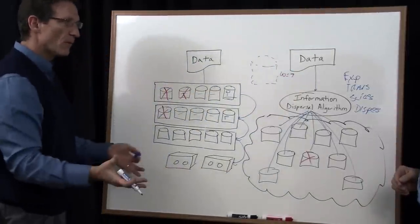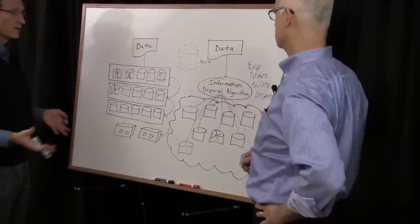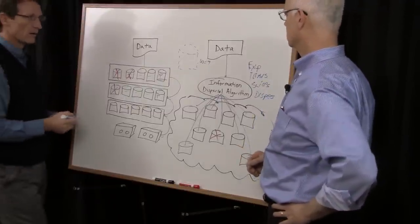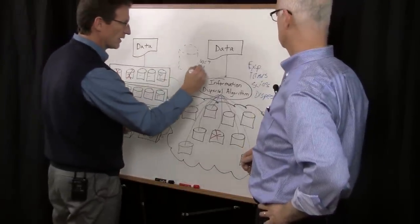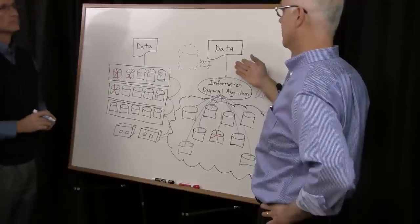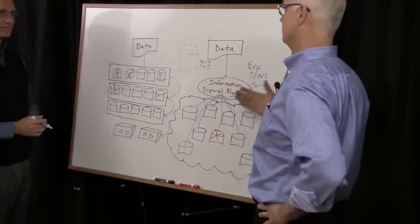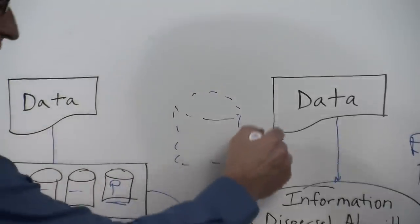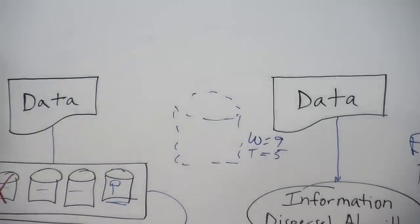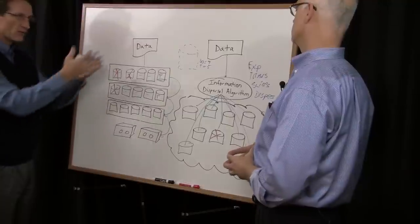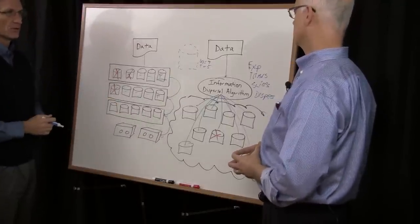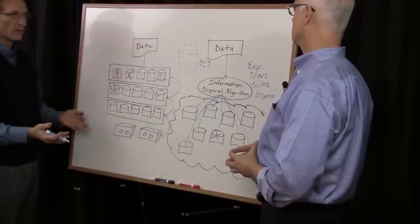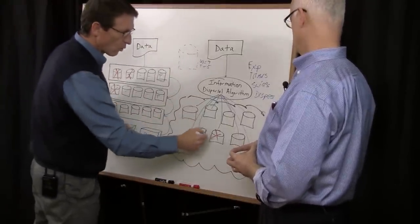There's a minimum number of those slices that are necessary to put the data back in its original form. We call that a threshold, and let's say the threshold is five. So it's a width of nine and a threshold of five, five being the minimum number you need to reconstitute the data set. What that means is that at any point in time, simultaneously, you could lose four of anything and still have enough pieces to put your data back in its original form.